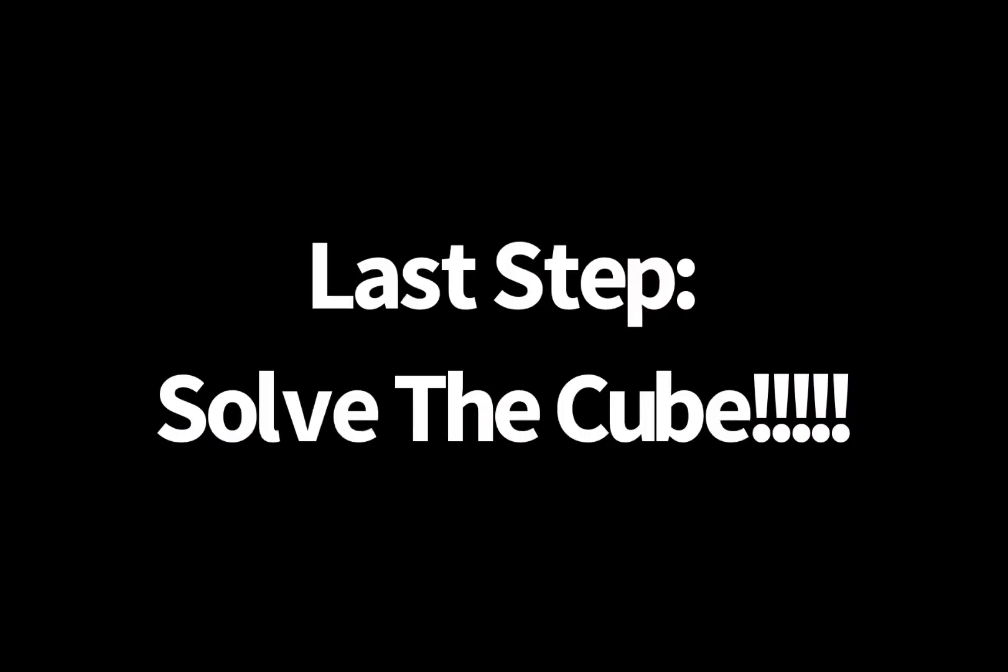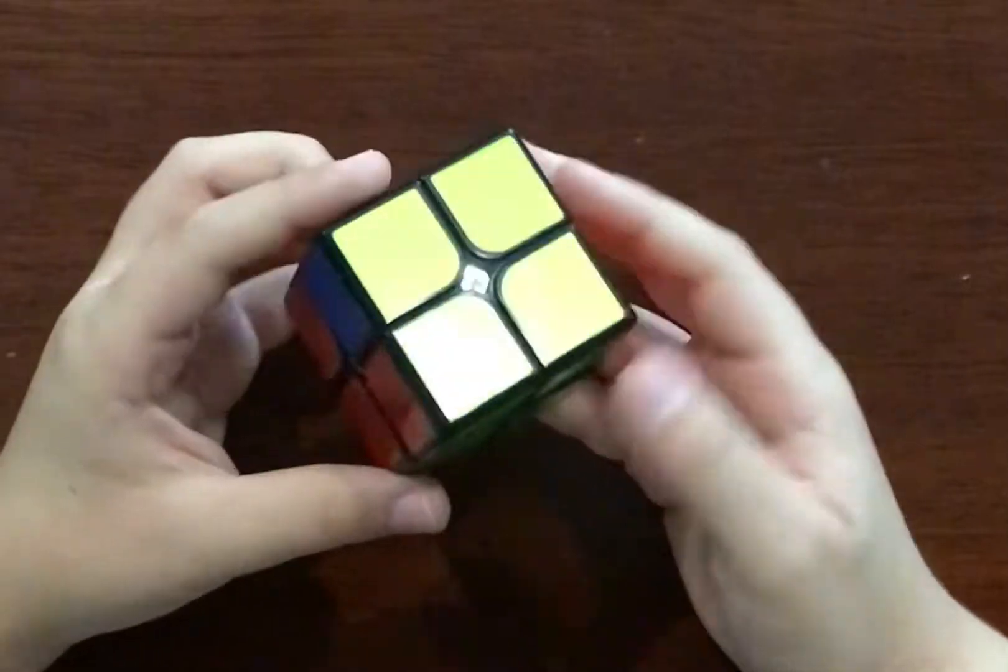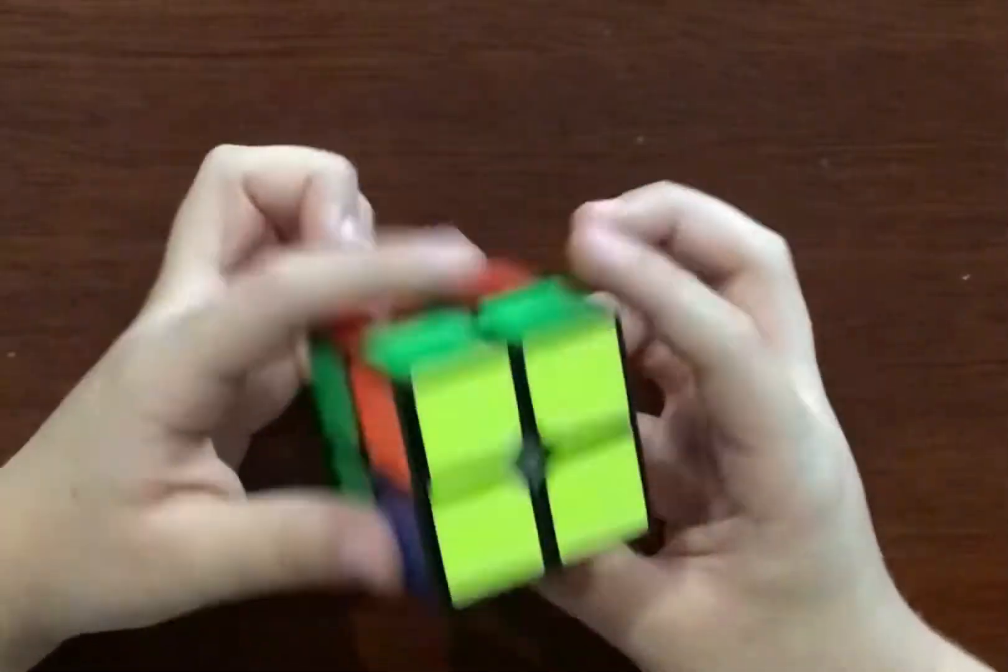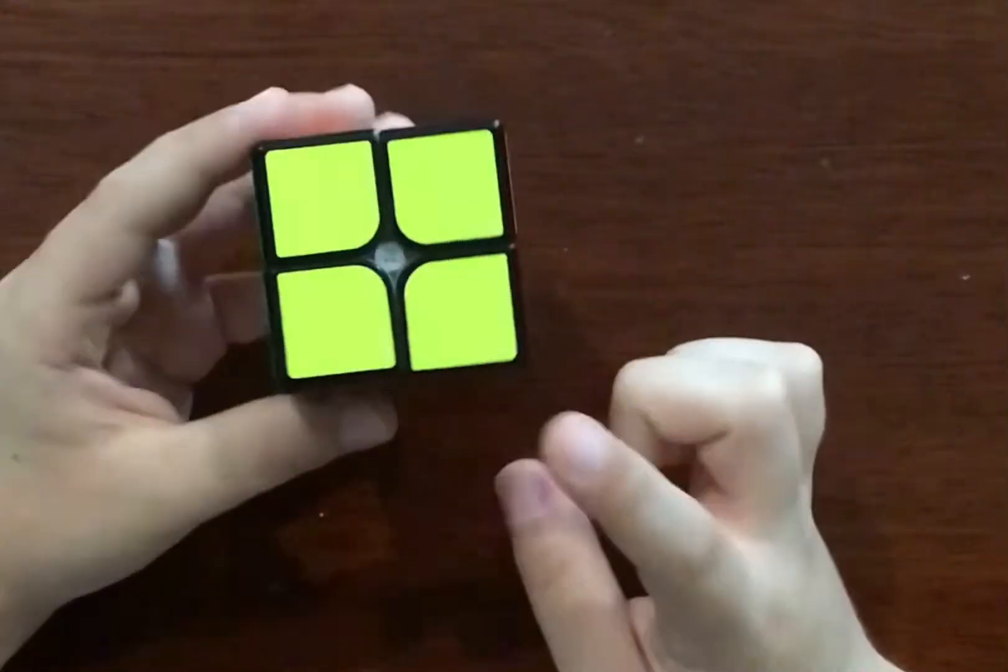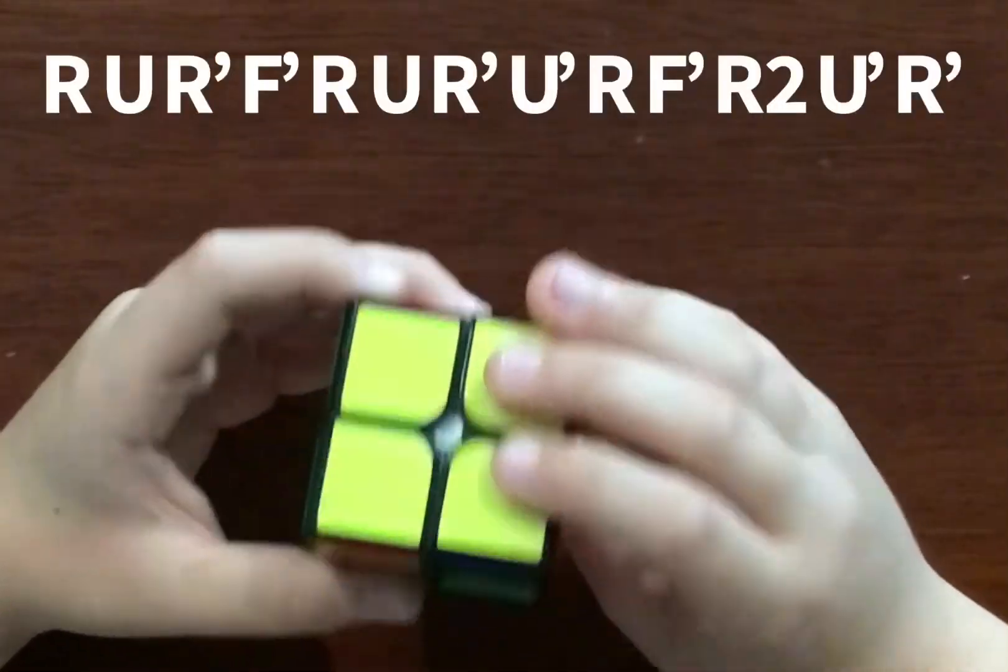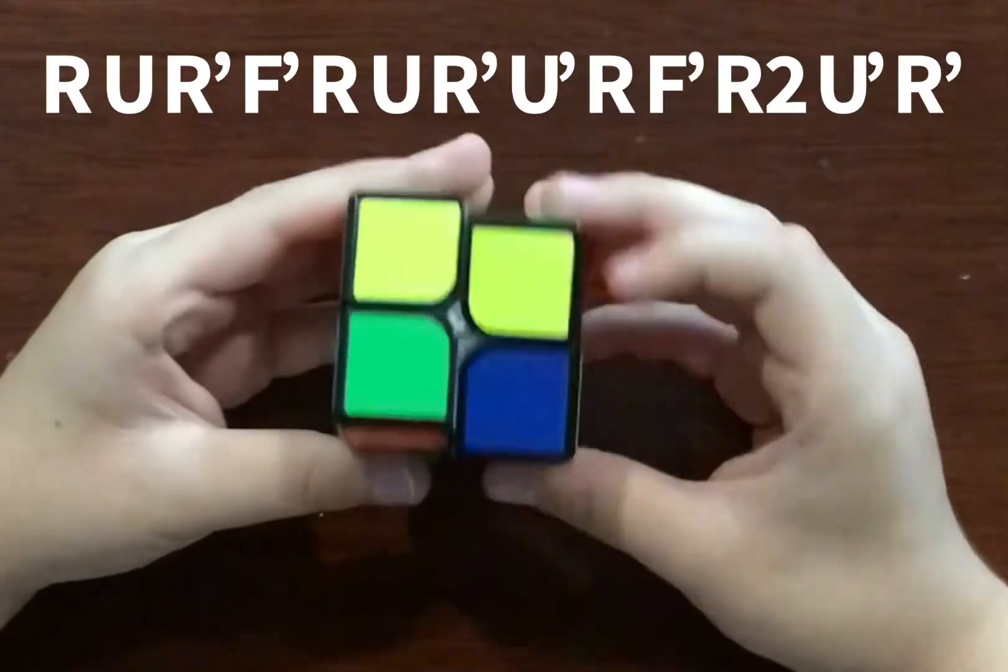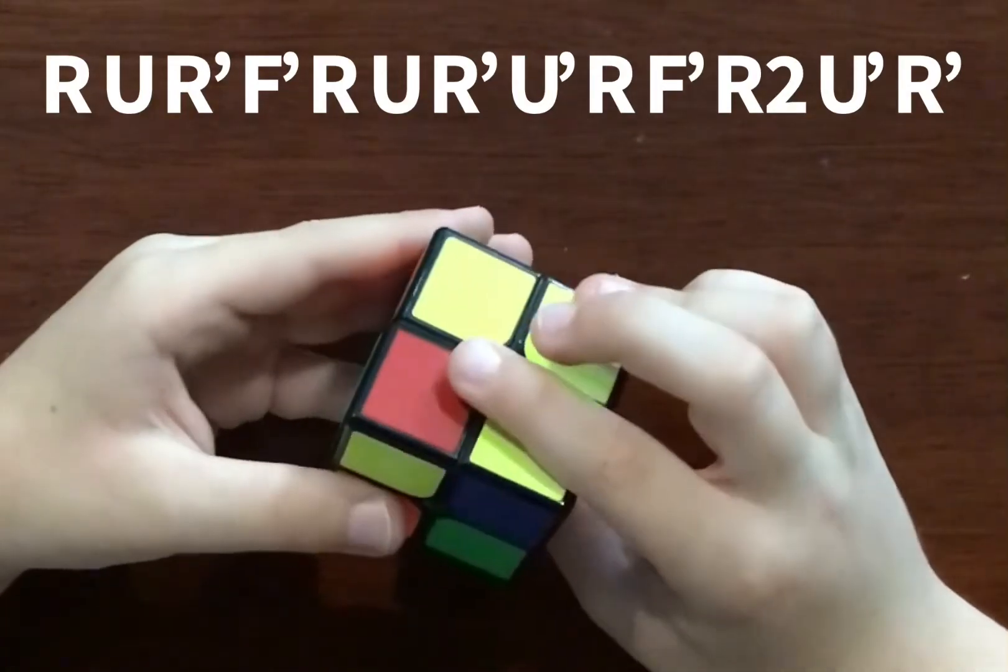Last step. When you go around the yellow and you see a bar there, put the bar on your left and do this: J prime, R, U, R prime, F, F prime, R, U, R prime, U prime.